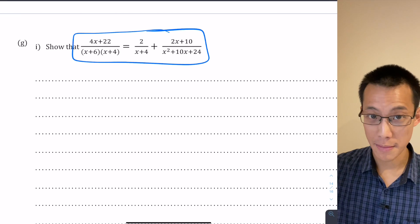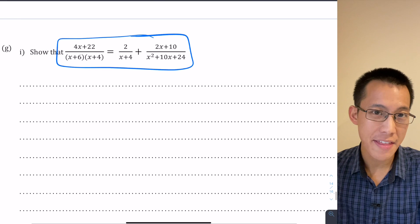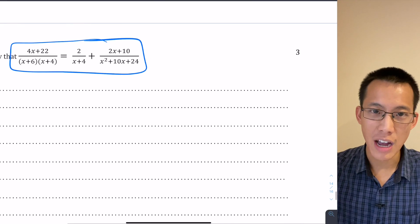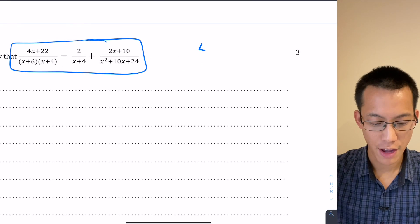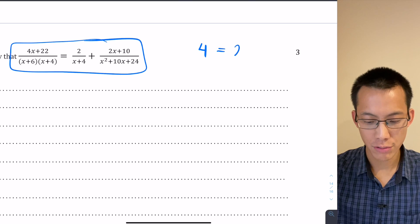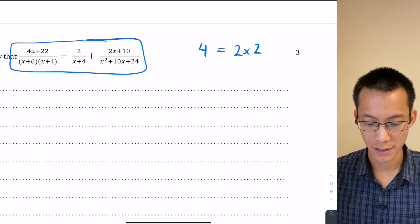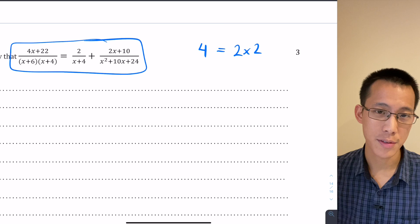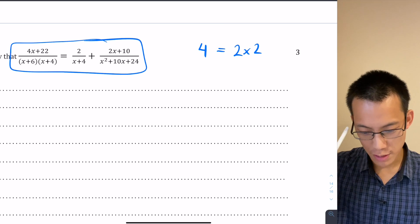The reason why that doesn't work is suppose you start with two things that happen to be equal, like 4 equals 2 times 2. Suppose we were asked to prove this. Well, if 4 equals 2 times 2 is my first line of working, what I might do is let's subtract 4 from both sides.